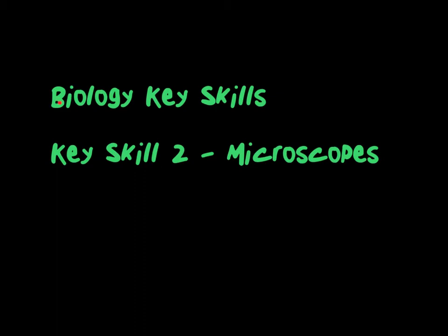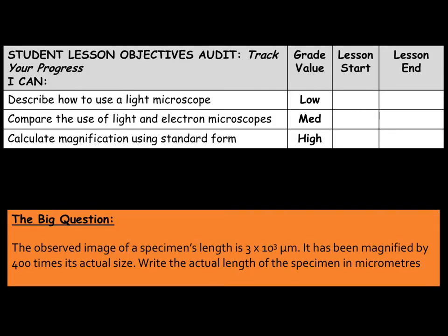This is the second video in the Biology Key Skills tutorial series. In this video, we'll be looking over microscopes as well as magnification calculations. We will look at how to use a light microscope, the use of both light and electron microscopes, and we will calculate magnification using standard form. For our big question today, the observed image of a specimen's length is 3 times 10 to the 3 micrometres. It has been magnified by 400 times its actual size. Write the actual length of the specimen in micrometres.